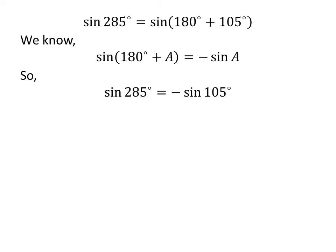So sine of 285 degrees is equal to minus sine of 105 degrees. Again, 105 degrees is equal to 60 degrees plus 45 degrees, so sine of 285 degrees is equal to minus sine of 60 degrees plus 45 degrees.